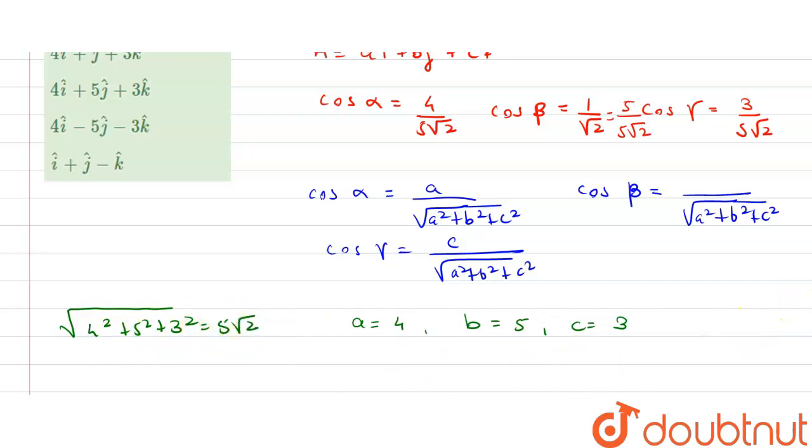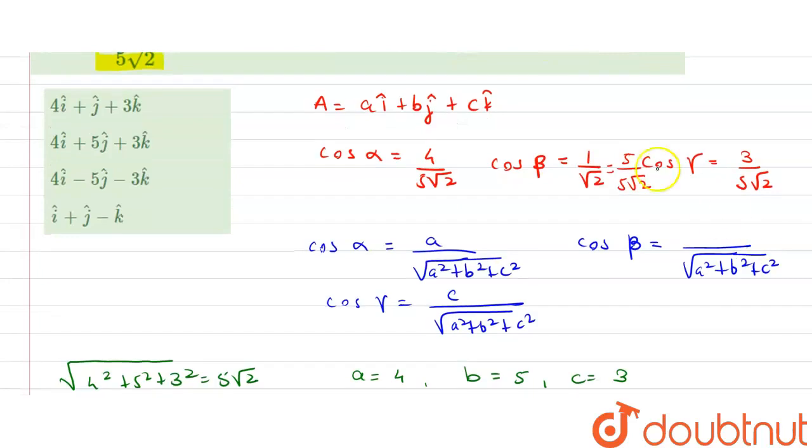So vector will be equal to 4î + 5ĵ + 3k̂. That is why option 1 is the right answer. Sorry, option 2 is the right answer. Thank you.